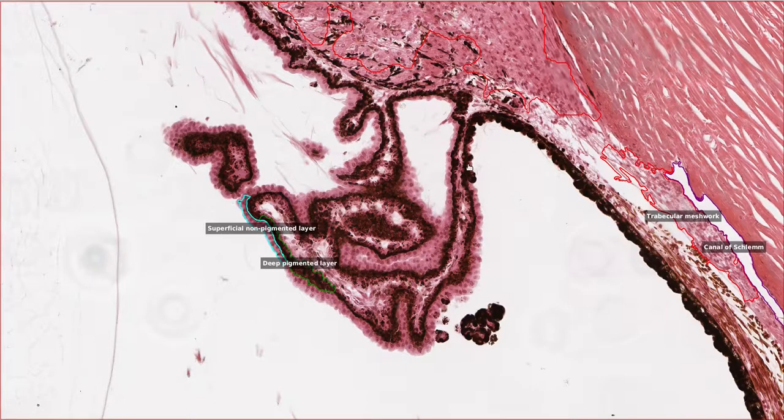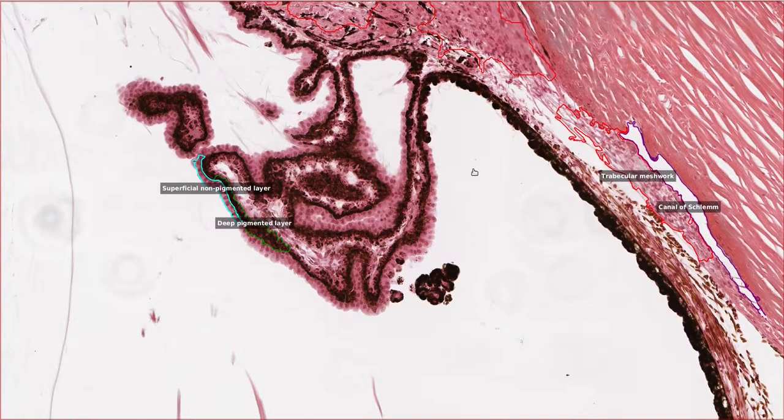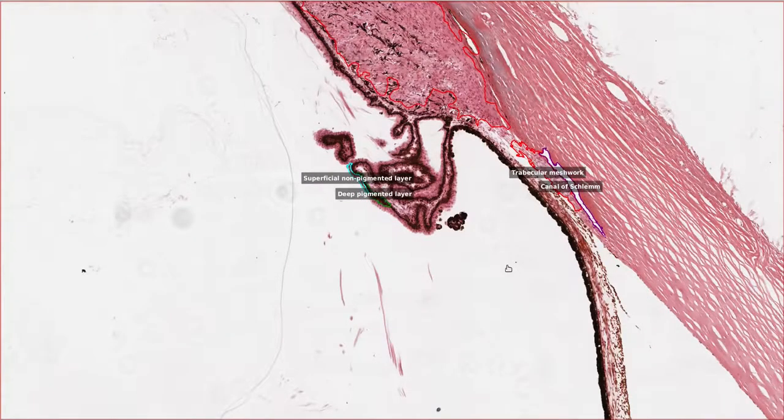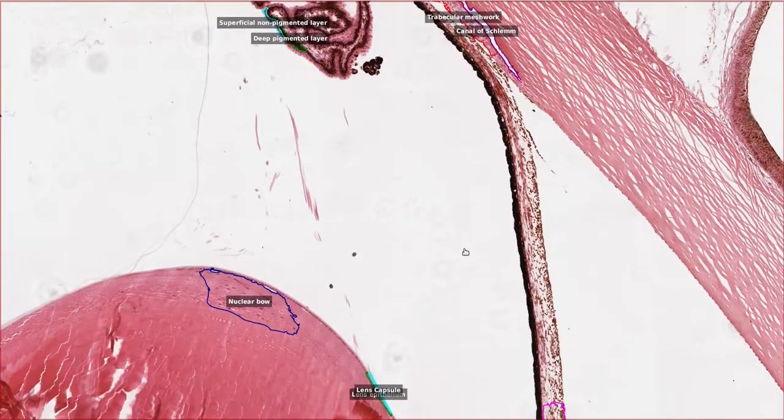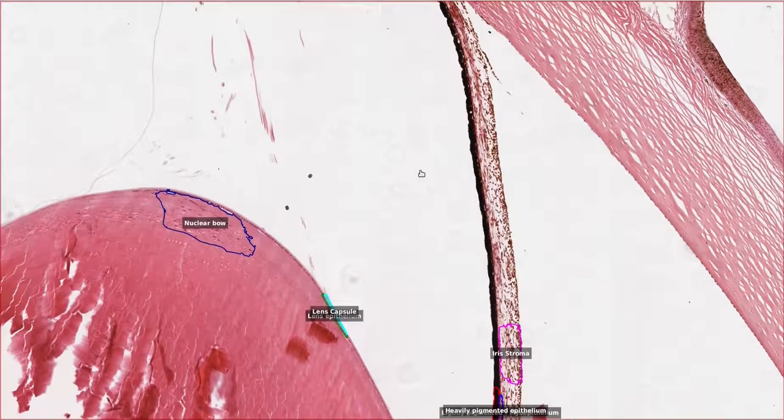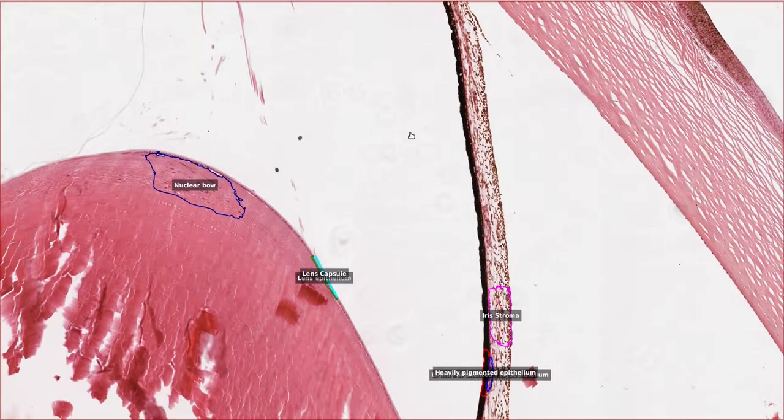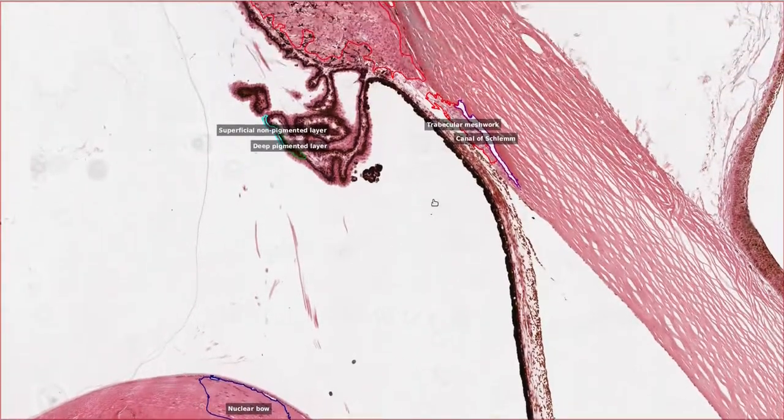The function of the ciliary processes is to produce aqueous humor which enters the anterior chamber via the pupil. Aqueous humor maintains eye pressure, keeping the lens and cornea in place, as well as supplying nutrients to the avascular cornea. So if there's a way of producing aqueous humor, there must be a way of getting rid of it as well.